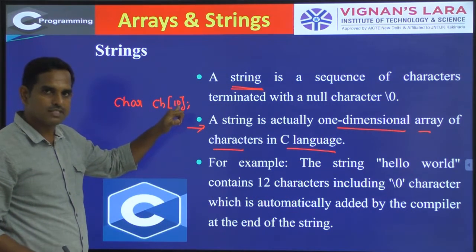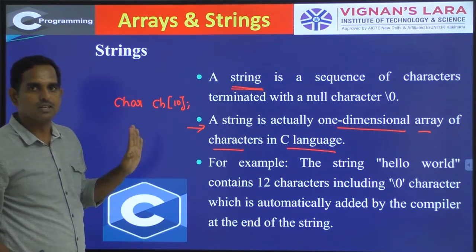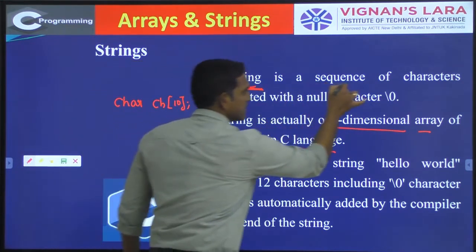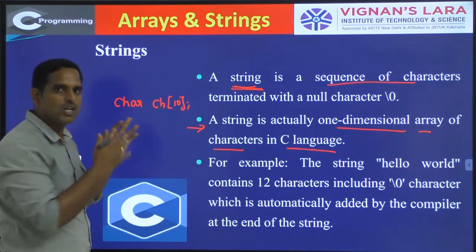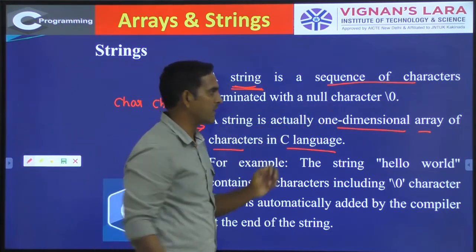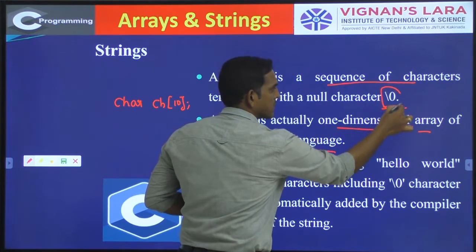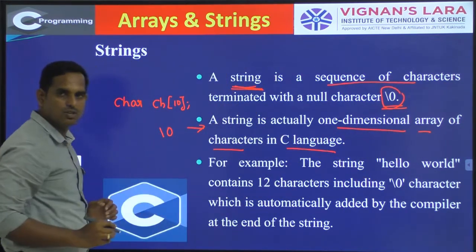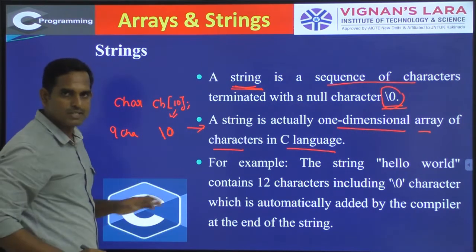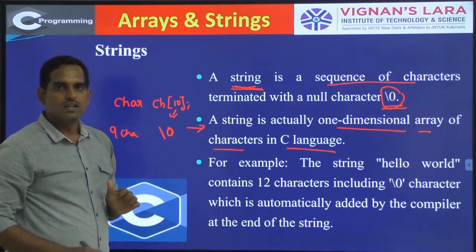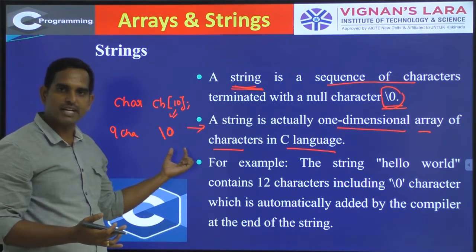A one-dimensional array, since you are having only one subscript, is a one-dimensional array. A one-dimensional array of characters is nothing but a string. So a string is a sequence of characters — if you specify the size as 10, we will have 10 characters. It is terminated by one special character called NULL, that is '\0'. Since you have written 10, we will have 9 characters followed by one special character — the null character. A string is a one-dimensional character array terminated by a null character.